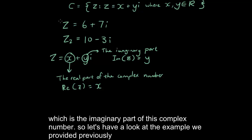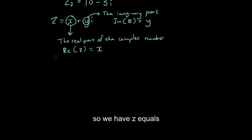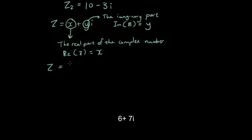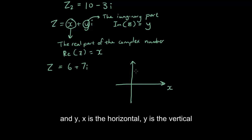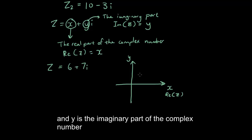So, let's have a look at the example we provided previously. So we have z equals 6 plus 7i and what happens is we can draw a graph on the Cartesian plane and we can have x and y, x is the horizontal, y is the vertical and remember how x is the real part of the complex number